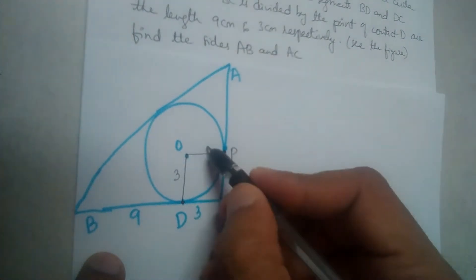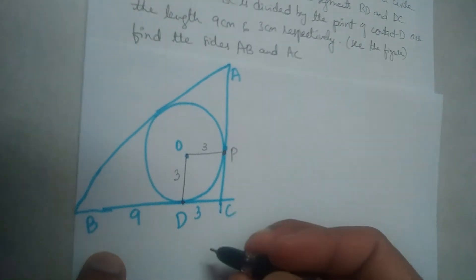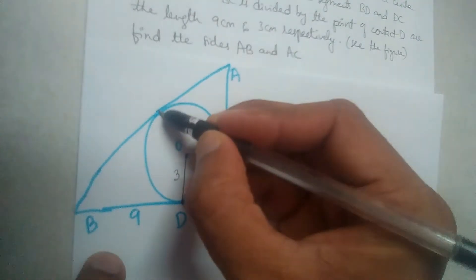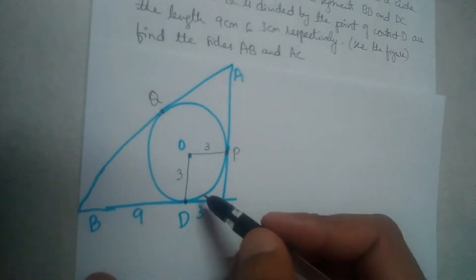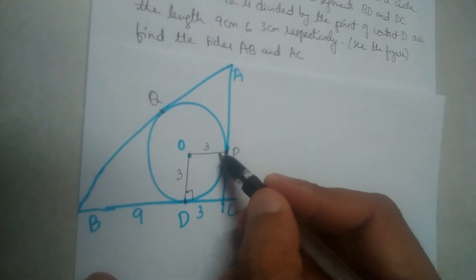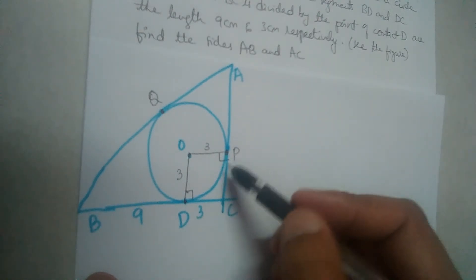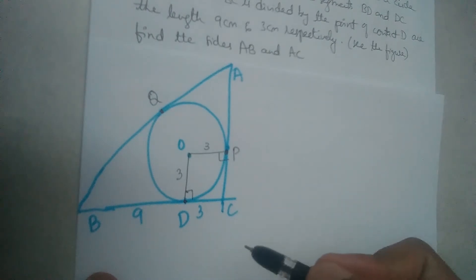If we join OP, this will also be 3 because OP is a radius. Let this point of contact be Q. Here, this angle is 90 degrees because tangent and radius are perpendicular to each other. Angle P is also 90 degrees for the same reason - tangent and radius are perpendicular to each other.